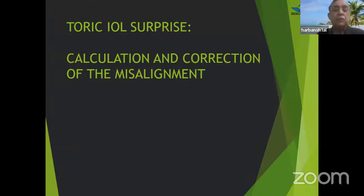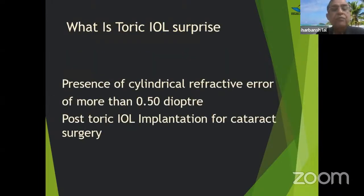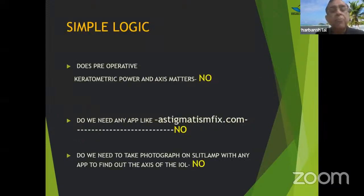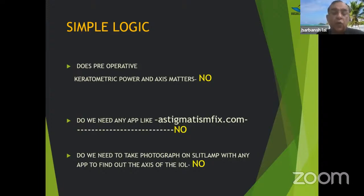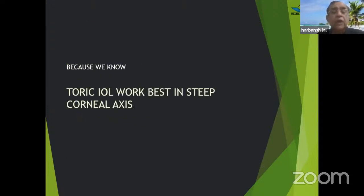Now I come to toric IOL surprise — calculation and correction of misalignment. A toric IOL surprise is defined as the presence of cylindrical effect of more than 0.5 diopter post-implantation for cataracts. My simple logic: does pre-operative keratometric power and axis matter post-op? No. Do we need any app like Astigmatismfix.com? No. Do we need to take any photograph to find the axis of the IOL? No. Why? Because we know the toric IOL works best at the steep corneal axis. Whatever was before surgery makes no difference — what matters is what it is now.